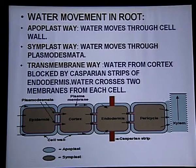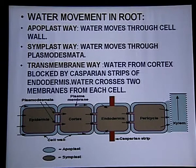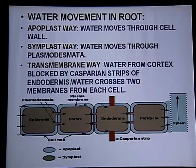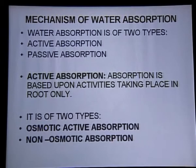So water movement occurs through three pathways: apoplast pathway — when water moves through cell wall; symplast pathway — when water moves through plasmodesmata; transmembrane pathway — when water from cortex is obstructed by the Casparian strips present in the endodermis and then water crosses the membranes of each cell, entering one membrane and exiting through another into the next cell.